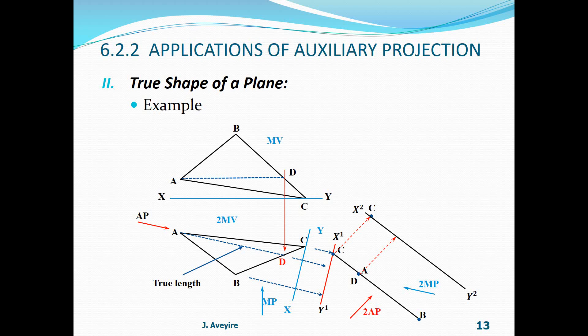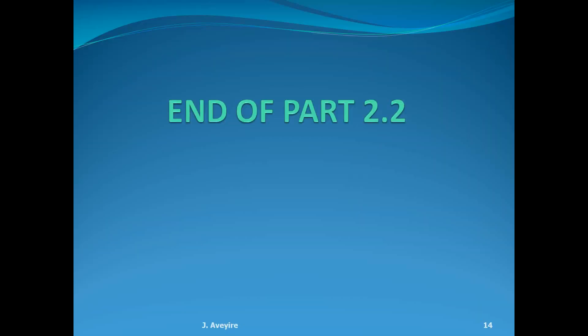Then we project point A. Looking at the second mutual view, A is a positive distance and the furthermost point from XY, so we plot it there. Then we project point B. Looking at the second mutual view, its perpendicular distance is also a positive value. We now have the three points of our triangle and can draw the true shape, which also gives us the true lengths of the respective edges. That's the true shape — end of Part 2.